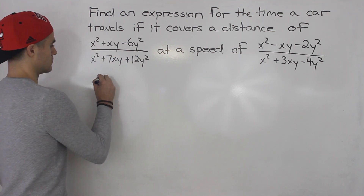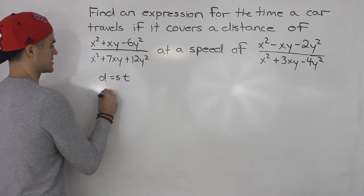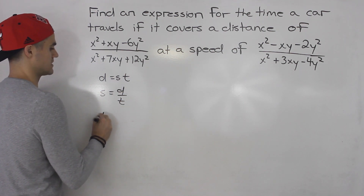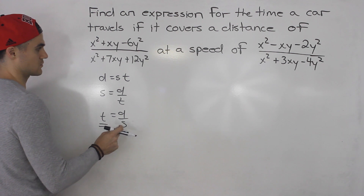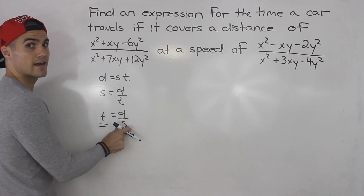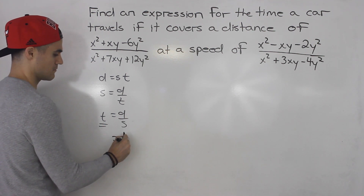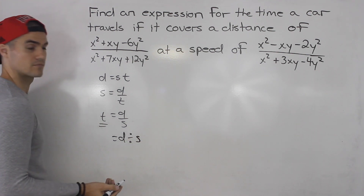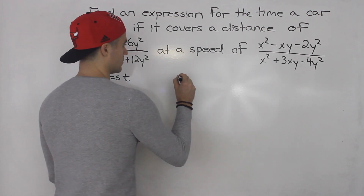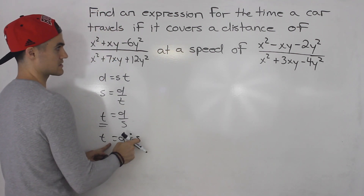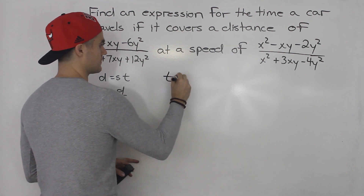We know distance equals speed times time, speed is equal to distance over time, and time is equal to distance over speed. In this case we're looking for time, so we're going to be taking the distance and dividing it by the speed. Time is equal to distance divided by speed.